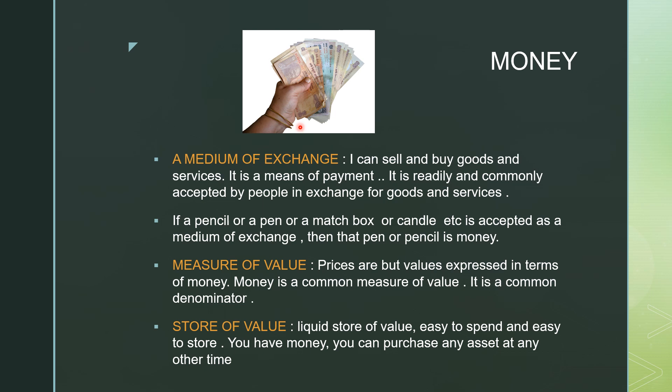Without a medium of exchange, it would be just like the barter system — very difficult to determine that 2 kg of rice is equivalent to one pair of shoes. Money facilitates the medium of exchange. You can sell anything, you can buy any goods or services. Money is a means of payment.